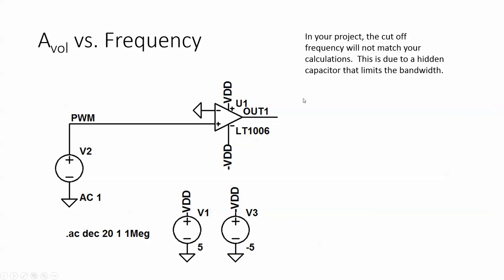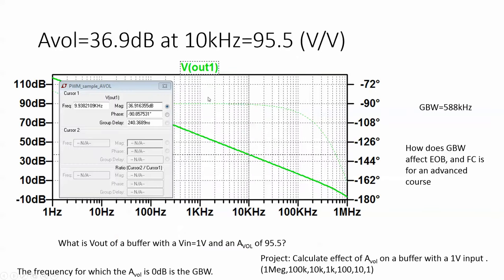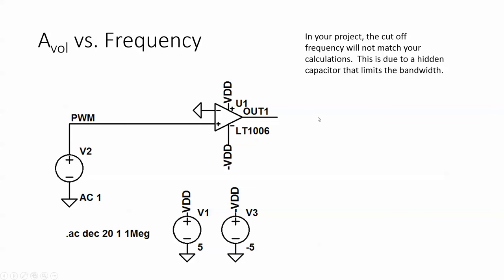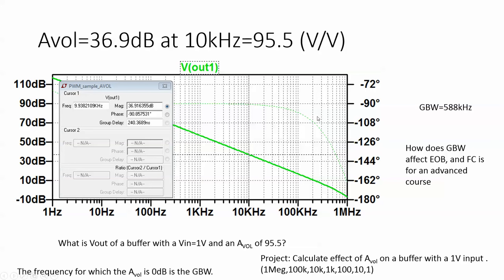Now in your project the cutoff frequency will be lower than you expect. And really that's because the open loop gain changes with frequency and limits the bandwidth. At 10 kilohertz, for example, the open loop gain is 36.9 dB, which for a buffer makes open loop gain equal to 95.5. And at 15 kilohertz it would be even smaller. So that small of an open loop gain can start to affect your circuit's performance. And part of the project is you need to calculate the open loop gain with a buffer, with a one volt input, at these values.